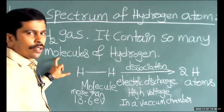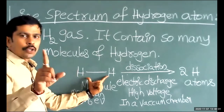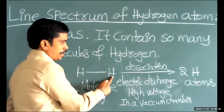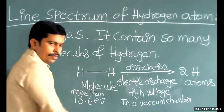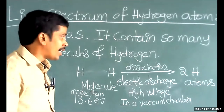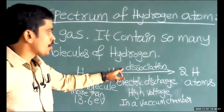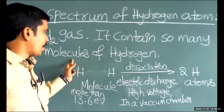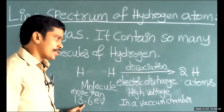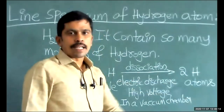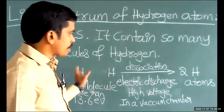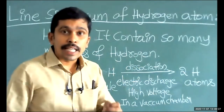The gas contains hydrogen molecules, represented as hydrogen single bond hydrogen. When this hydrogen gas undergoes electric discharge, the bond between the atoms is going to get dissociated — bond breaking or bond fission, that is dissociation. When the gas is subjected to electric discharge using more than 13.6 electron volts of energy, then we get hydrogen atoms in the electric discharge tube.